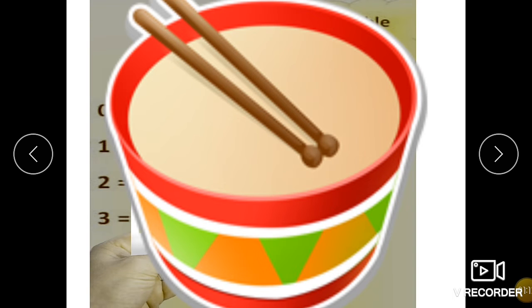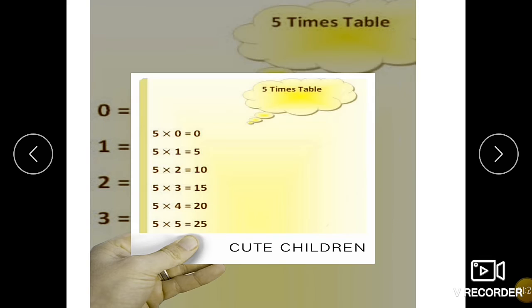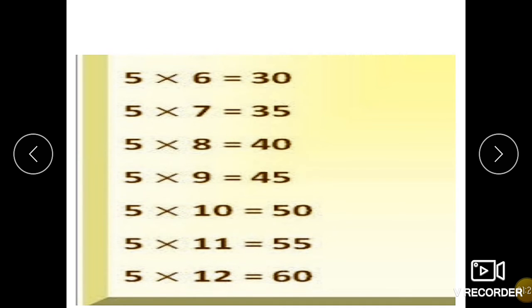5 0s are 0. 5 1s are 5. 5 2s are 10. 5 3s are 15. 5 4s are 20. 5 5s are 25. 5 6s are 30. 5 7s are 35. 5 8s are 40. 5 9s are 45. 5 10s are 50. 5 11s are 55. 5 12s are 60.